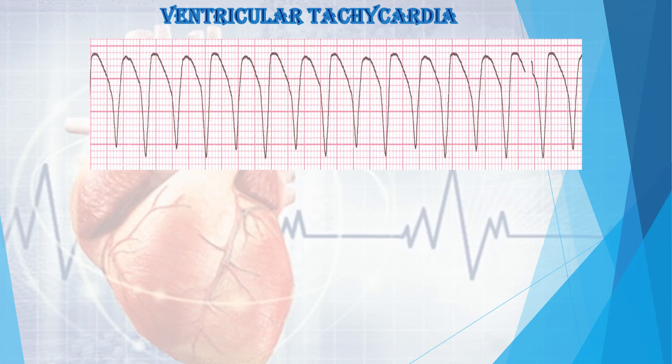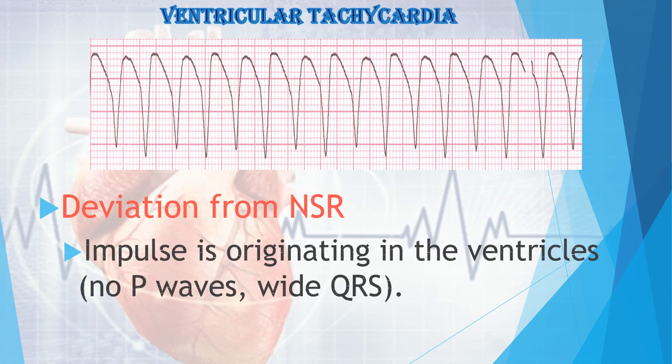The ECG of ventricular tachycardia shows the impulse originating in the ventricle with no clear P wave and a wider QRS complex.